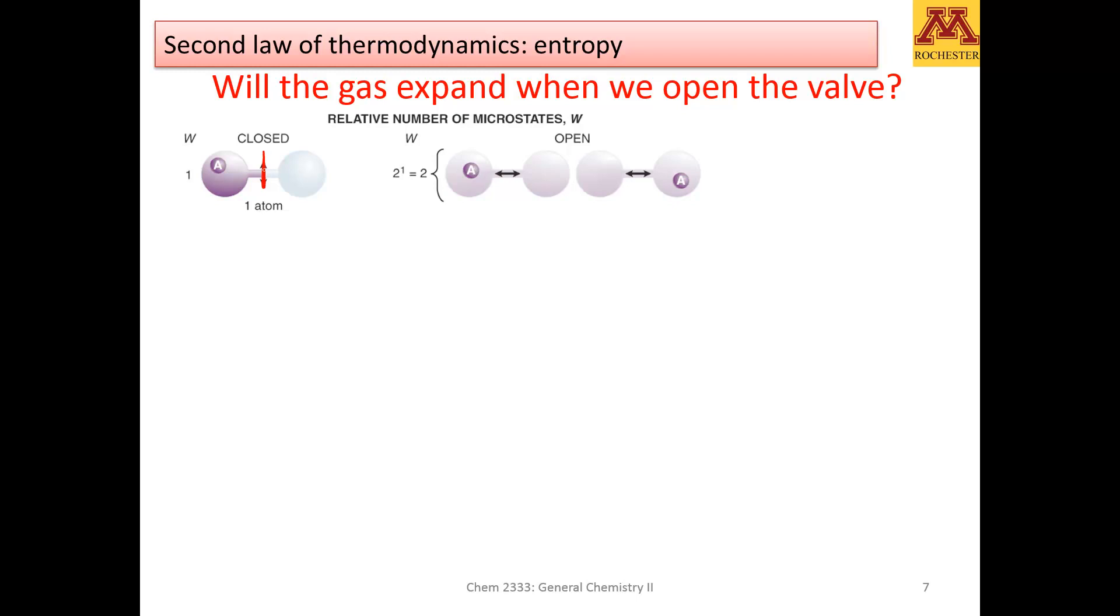Let's say that you have just one particle. If I remove the barrier, now I have, there's one possibility here, but if I remove the barrier I have two possibilities. I can put the atom on the left or the atom on the right.